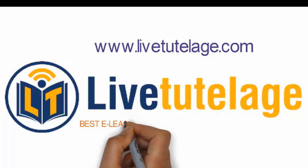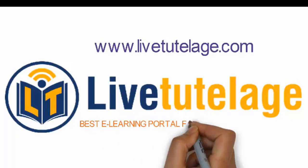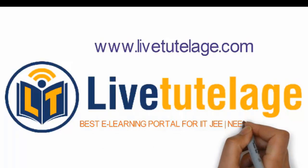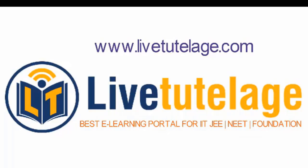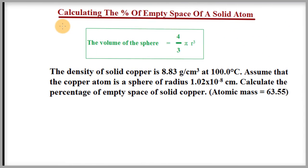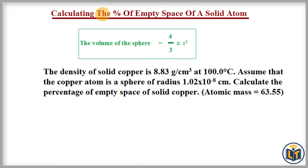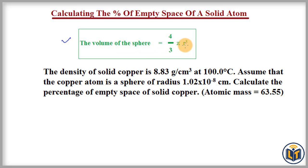Welcome to LiveToclets.com, the best e-learning portal for IIT JEE and foundation courses. In this video, I will discuss how to calculate the percentage of empty space in a solid atom. The formula for the volume of a sphere is: volume = (4/3)πr³.